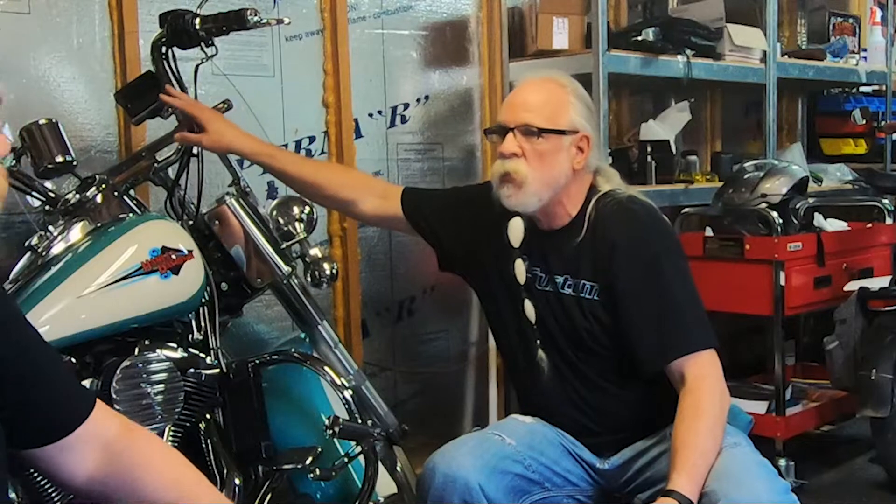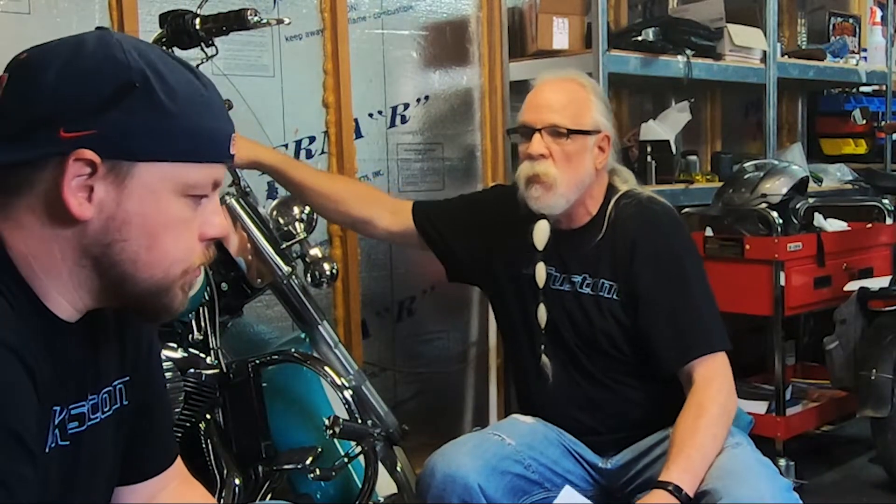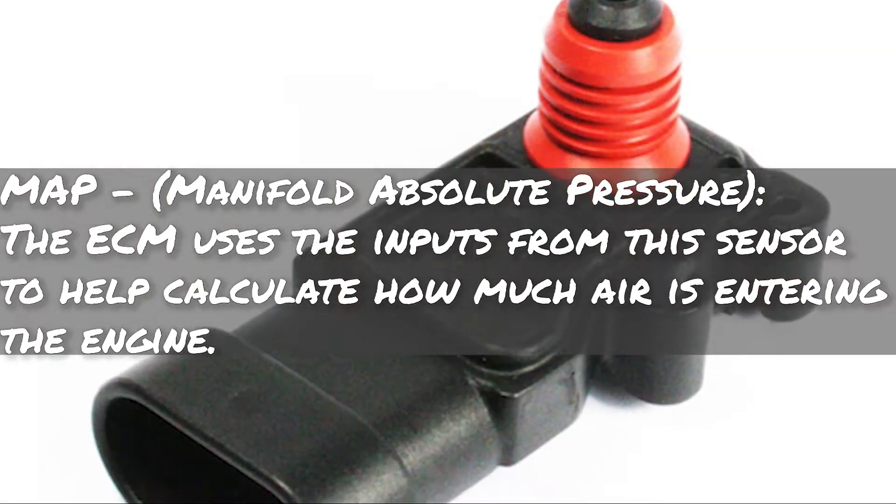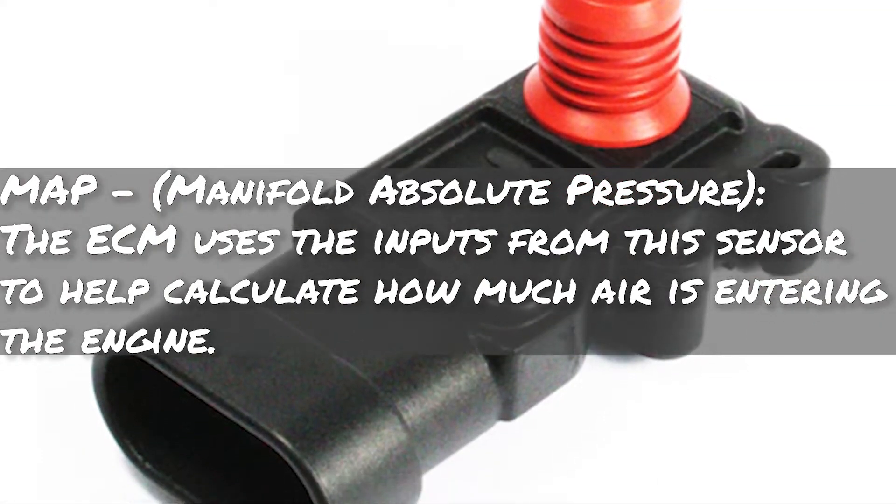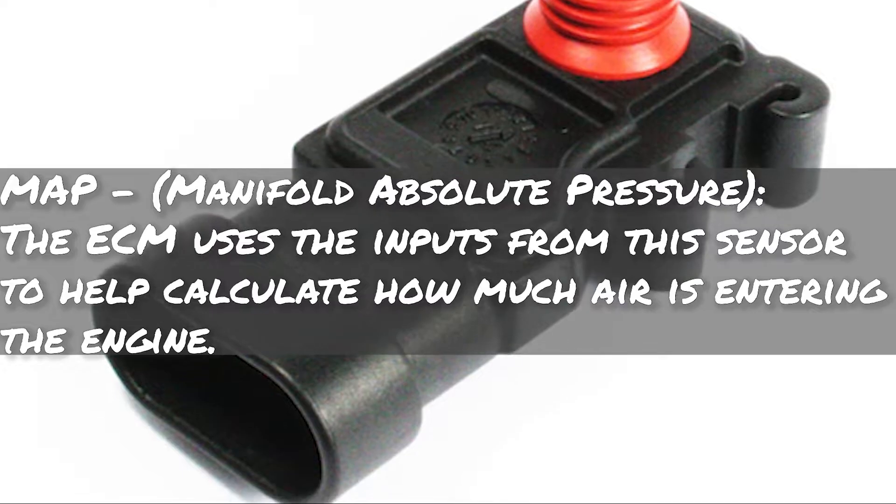Next is MAP — and this is where it can get confusing, because MAP also refers to your tune. But in the sensor context, MAP stands for Manifold Absolute Pressure. For those with Power Visions who can monitor different things on your bike, manifold air pressure is one worth always keeping on screen. The ECM uses the input from this sensor to help calculate how much air is entering the engine, so it knows how much fuel to add.